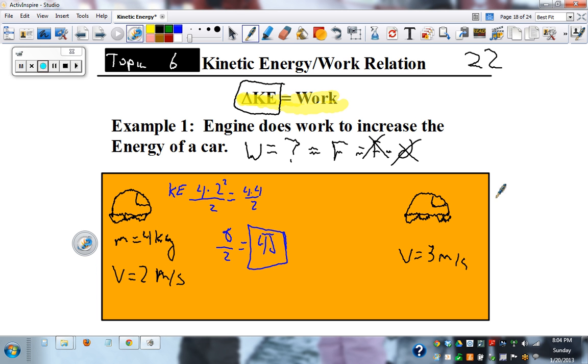And let's finish up. Mass is 4 times 3 squared over 2. 4 times 9 over 2. 36 over 2. Half of 36. 18 joules.